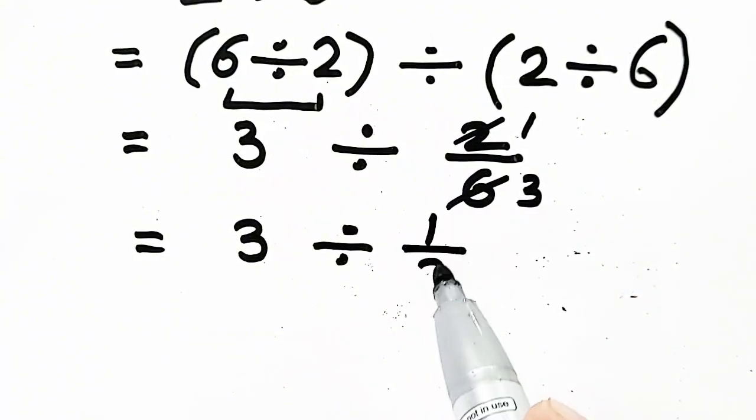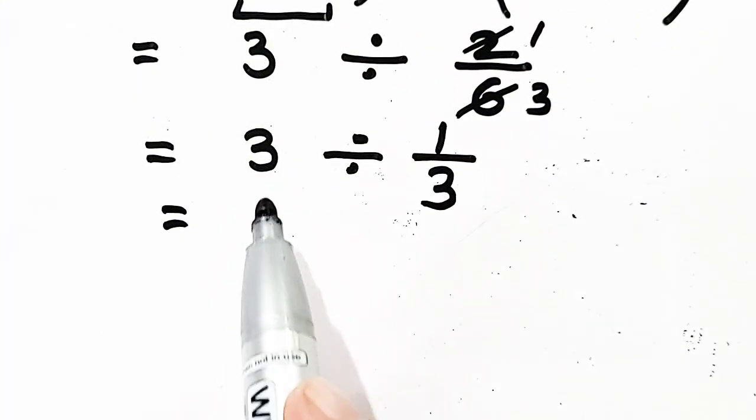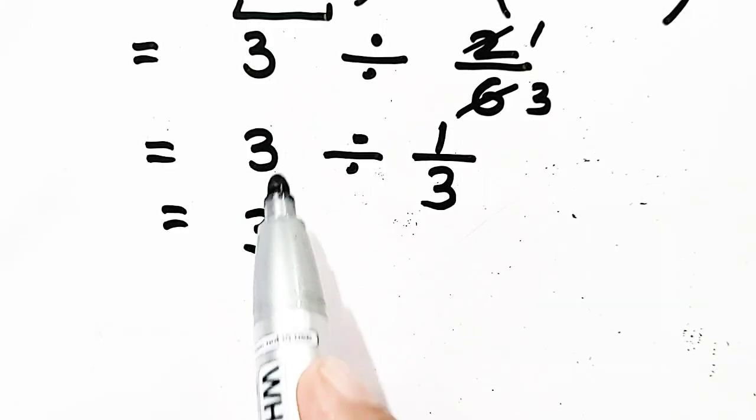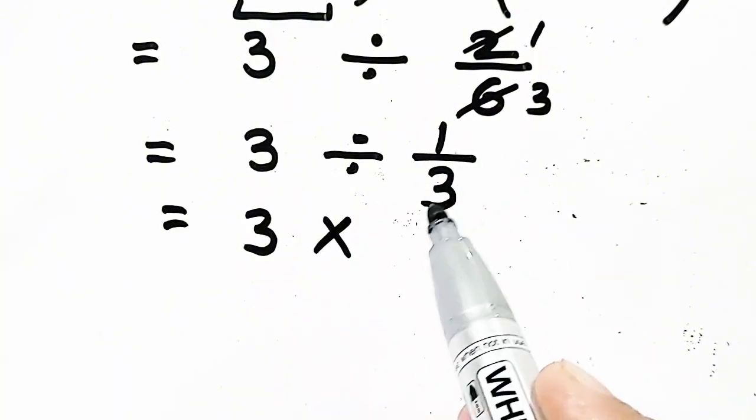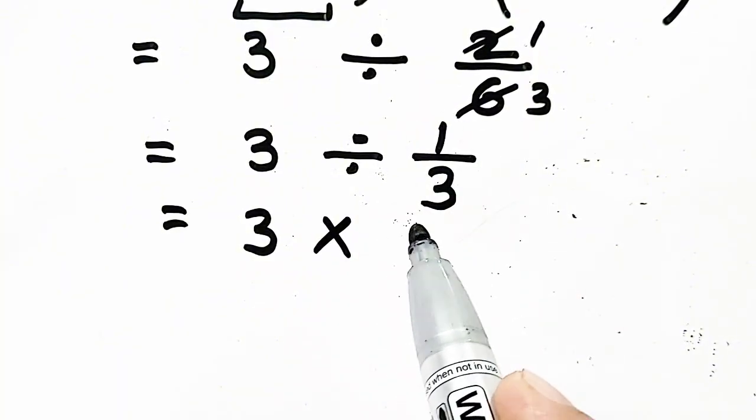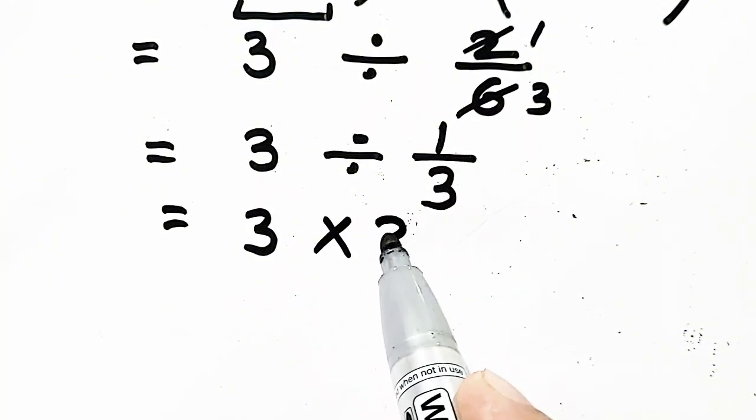So we have three divided by one-third. Now we will apply the KCF or CCF rule. Three is unchanged and will remain the same. Divide is converted or changed into multiplication. That one-third is flipped, so it becomes three.